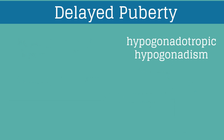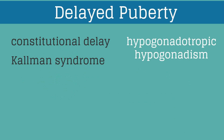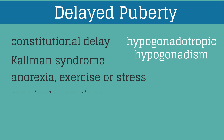In hypogonadotropic hypogonadism, the arcuate nucleus does not secrete GnRH. The most common etiology is constitutional delay, accounting for 20% of all cases of delayed puberty, and this tends to be familial. With Kallmann's syndrome, there are hypoplastic olfactory tracts and the arcuate nucleus does not secrete GnRH, resulting in little or no sense of smell and delayed puberty. Other etiologies include anorexia, exercise, or stress, and craniopharyngioma is the most common tumor associated with delayed puberty.